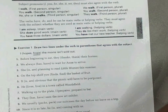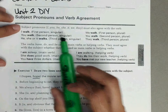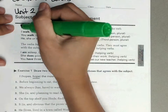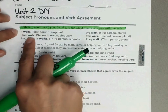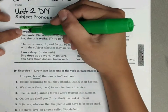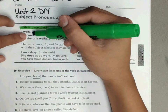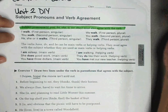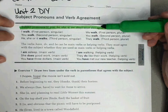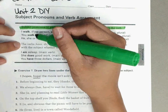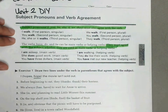Up at the top, this is subject pronouns and verb agreement. Our subject pronouns are I, you, he, she, it, we, and they. They must also agree with the verb. I is one, so our verb has to be singular. You is singular, so our verb has to be singular. We is plural, so our verb has to agree. The verbs have, do, and be can be main verbs or helping verbs. They must agree with the subject whether they are used as main verbs or helping verbs.